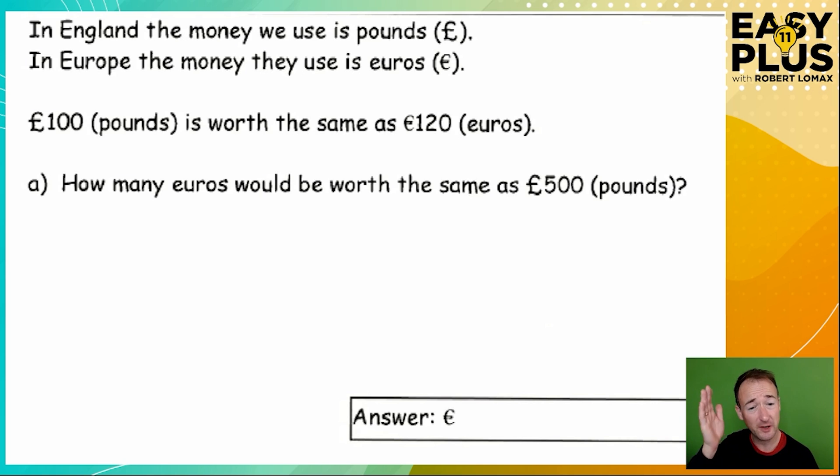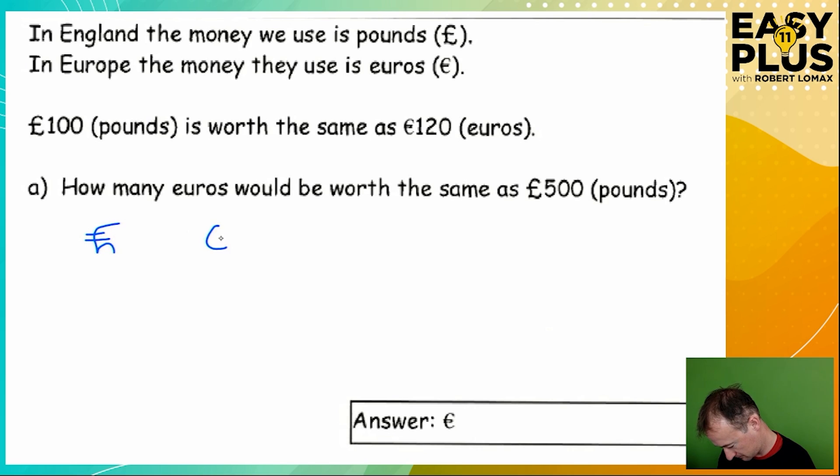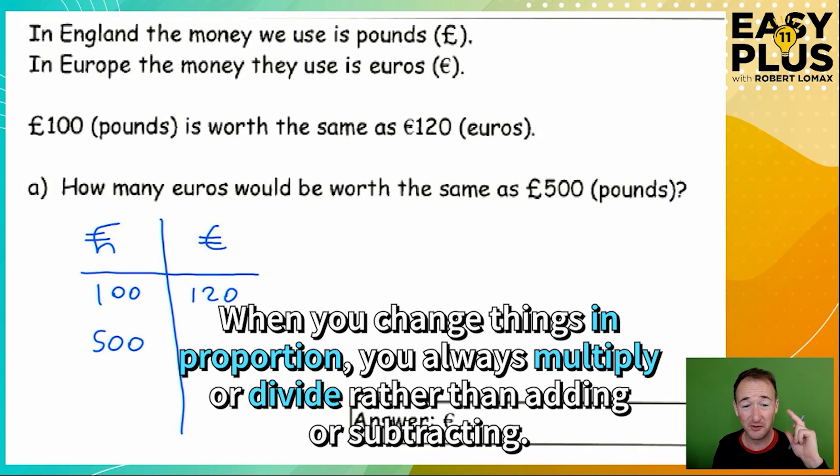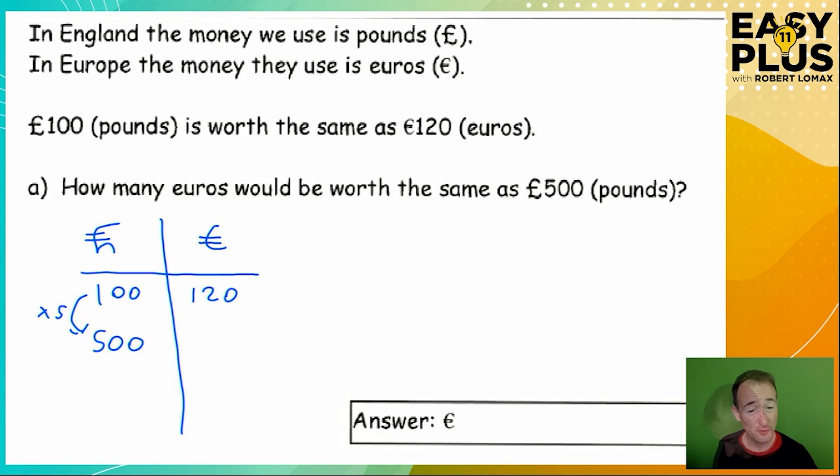So the easiest way to handle it is to set up a nice, simple table. Those are my symbols for pounds and euros. Now we've done what you should always do at the start of a maths problem that might be confusing. We've just written down what we know, which is that £100 gives €120. But we want to know how many euros are equivalent to £500. What have we done to get from £100 to £500? Don't say that we've added 400. Instead, we've multiplied the amount by 5. Therefore, to get the equivalent amount in euros, we also need to multiply it by 5. So the answer is 600 euros.